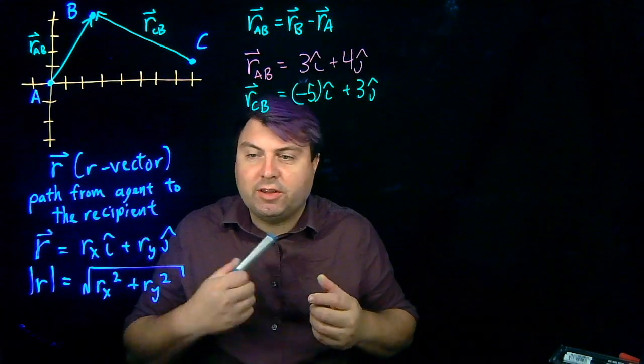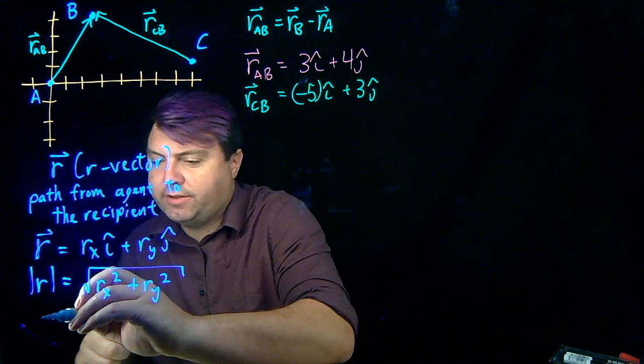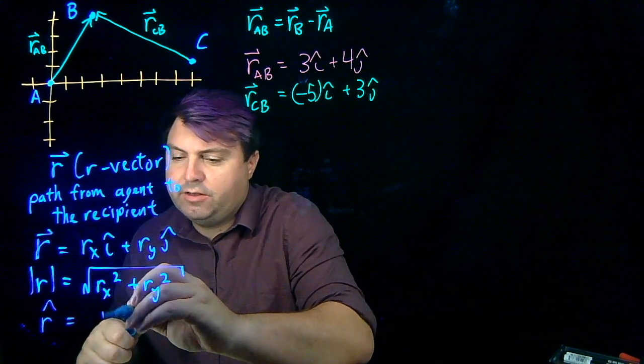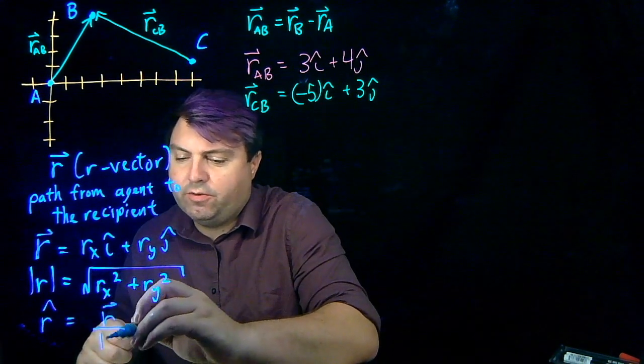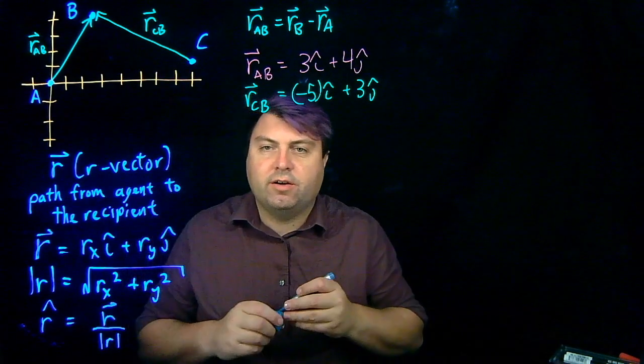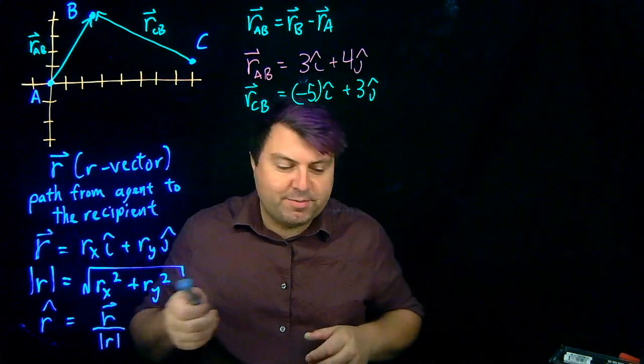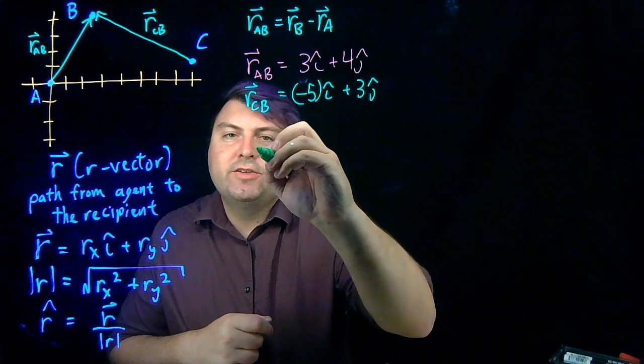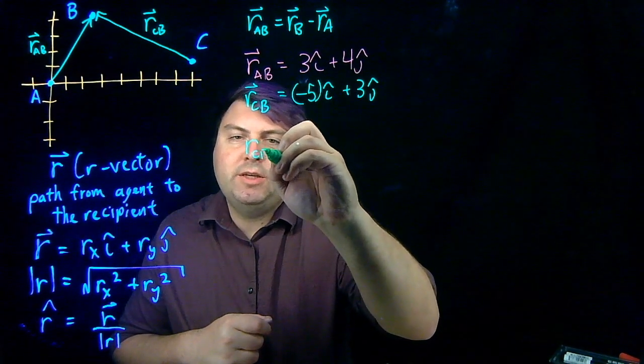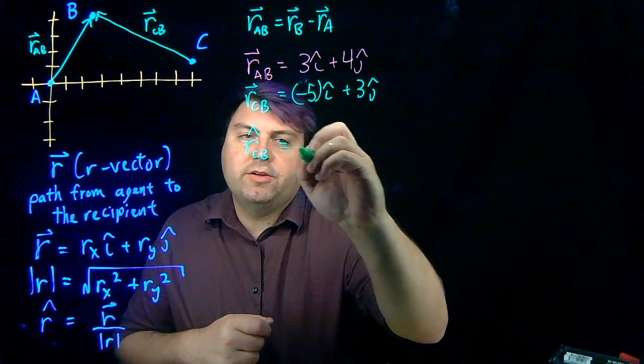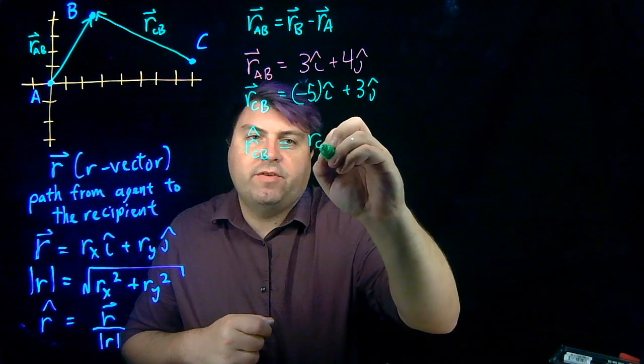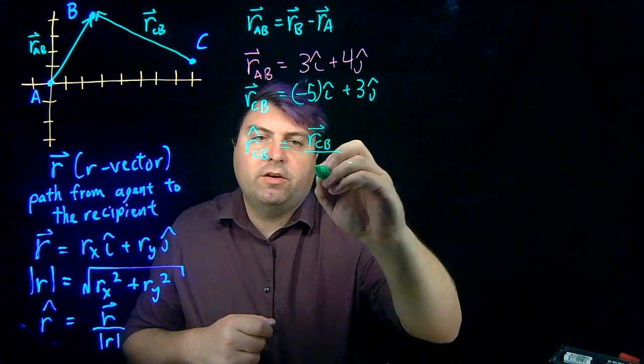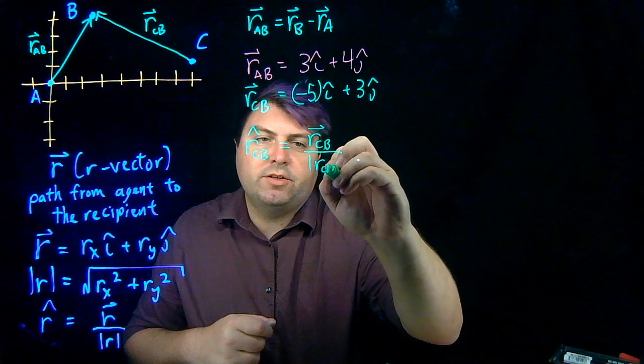And we have our last one, which is r-hat, is equal to our r-vector over our magnitude of r. So we've run out of space down there, so we're going to write it over here. So in terms of C-B, our r-CB-hat is equal to r-vector CB over the magnitude of r-CB.